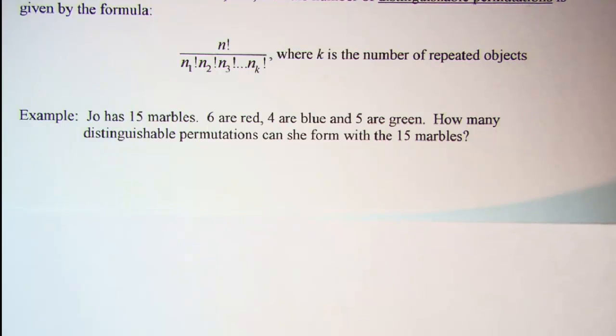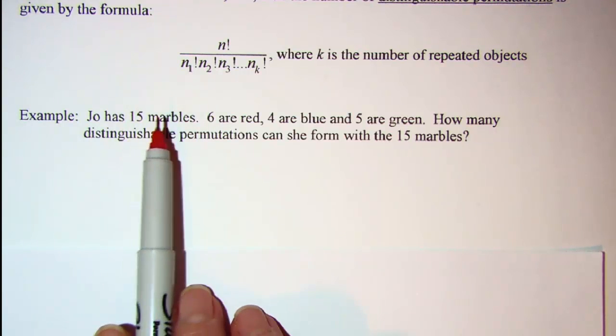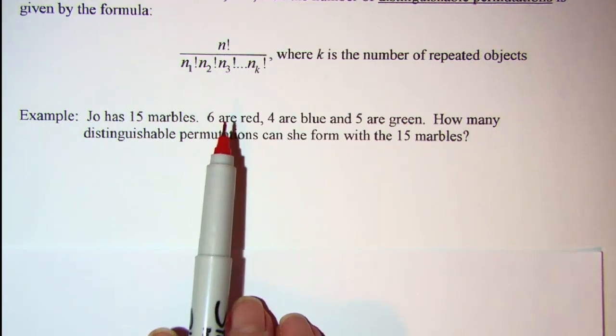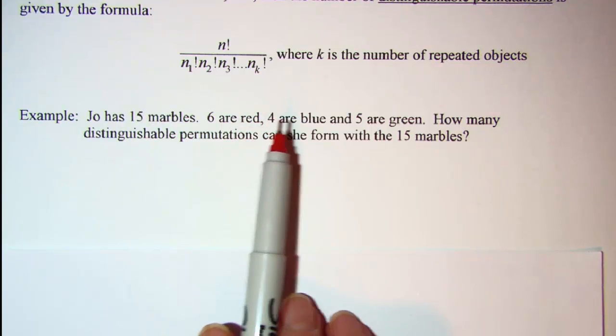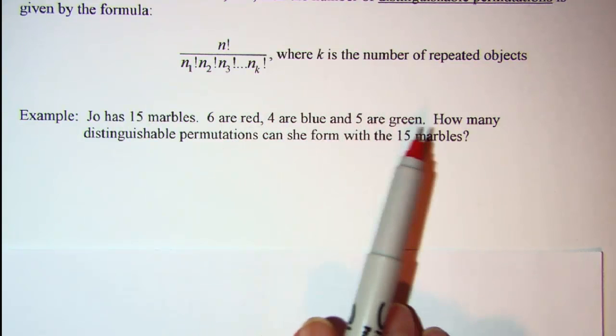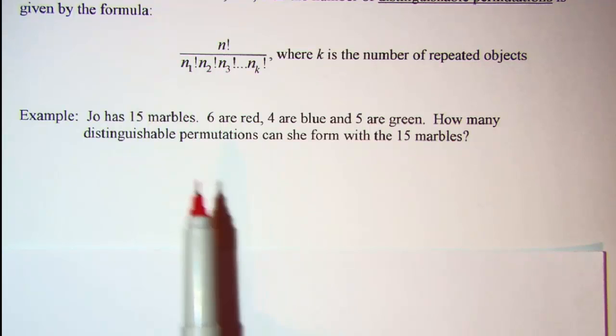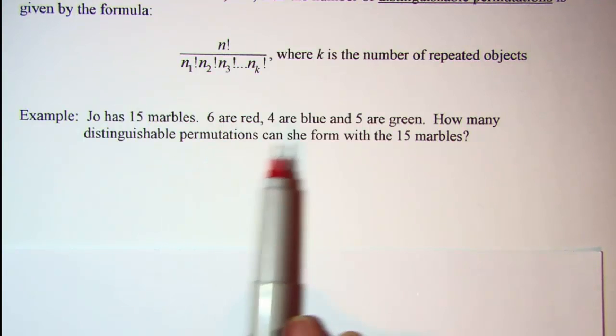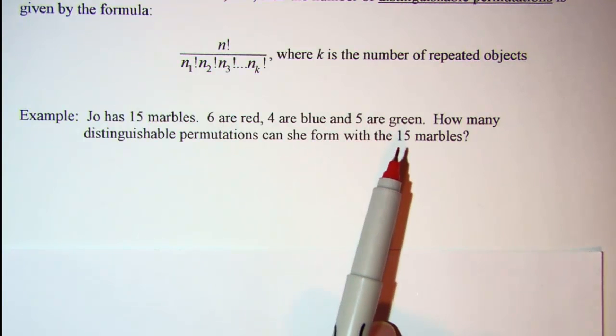Our first example: Joe has 15 marbles, 6 are red, 4 are blue, and 5 are green. How many distinguishable permutations can she form with the 15 marbles?